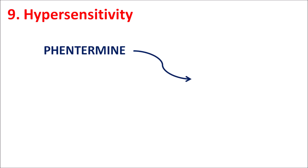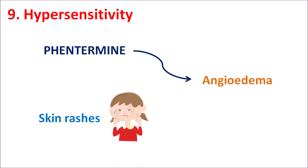The ninth contraindication is hypersensitivity. Like amphetamine, phentermine can produce hypersensitivity reactions resulting in angioedema — swelling of the lips, throat, neck, and pharynx — causing difficulty in swallowing. It can also produce skin rashes. If these symptoms develop, they may produce fatal systemic effects, so phentermine is again contraindicated.